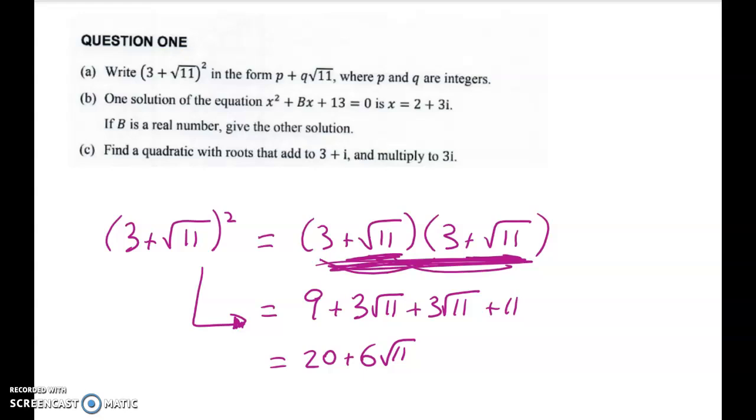So that's your final answer there, and I don't think you had to, but you could just say that p was 20 and q was equal to 6 because that's the form you've been asked for.